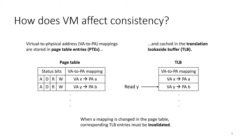Why is it important to account for virtual memory and how can it affect consistency? When a memory access occurs on a system with virtual memory, the physical address, or PA, that is being accessed by the effective virtual address, or VA, of the memory operation must be resolved. The address can be translated by accessing the VA to PA mapping stored in a page table entry, or PTE. Page tables are per-process structures stored in memory that hold VA to PA mappings. Processors with virtual memory use translation look-aside buffers, or TLBs, on each core to cache VA to PA mappings.